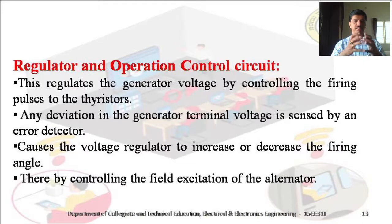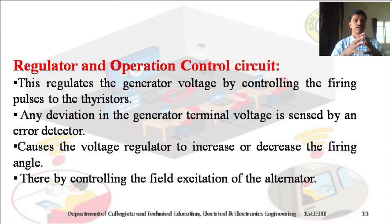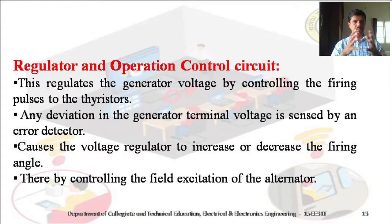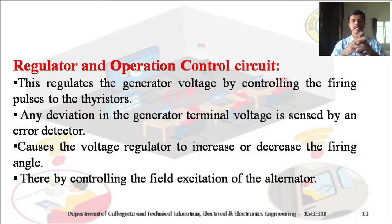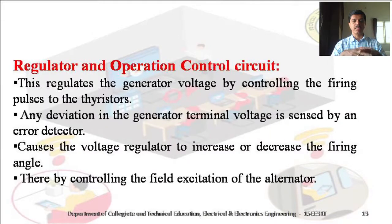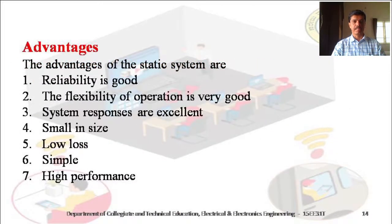If any deviation in the generator terminal voltage occurs, it will be sensed by sensing devices and an error detector. The error detector compares the output voltage with a predetermined value, and by giving firing pulses to the thyristor, it controls the field excitation of the alternator.